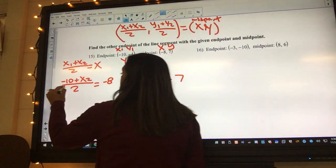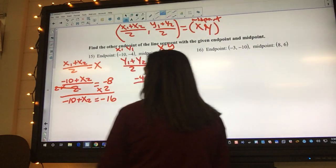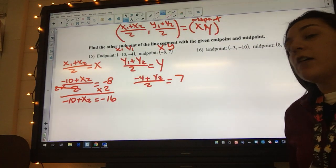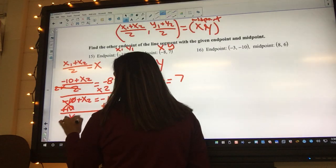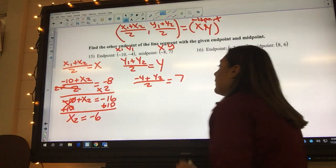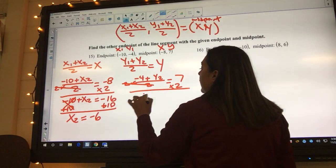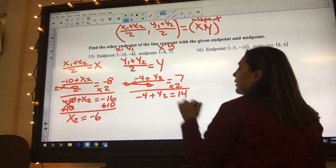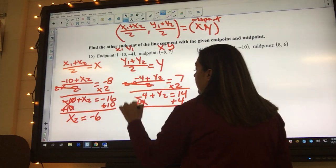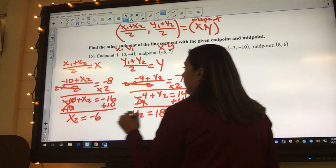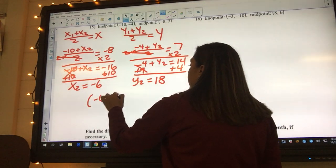Well, we multiply both sides by 2, so I got negative 10 plus x sub 2 equals negative 16. And I'm still solving for x2, so I'm going to say plus 10 plus 10, so I got x sub 2 equals negative 6. And now I can solve for the y's, so I'm going to say times 2 times 2. Negative 4 plus y2 equals 14, and then we add 4 to both sides. y sub 2 equals 18. And my very last step is to write these in coordinate form, the way that they're supposed to look.